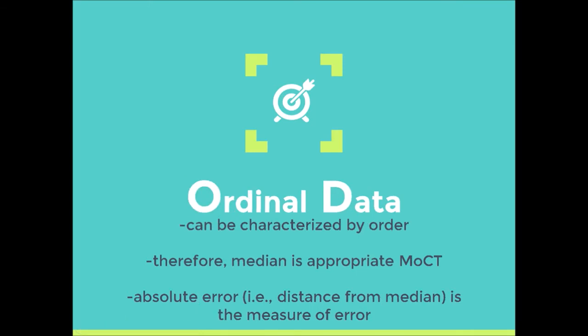With ordinal data, remember, the data can be sequenced — they can be put in order from smallest to largest. Therefore, we use the median, which is the value that occurs at the 50th percentile, the middle value. And once we've done this, we can see how the scores vary from that median. There are measures we'll talk about to describe dispersion or variability around the median.